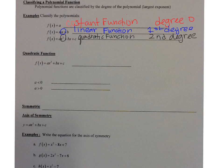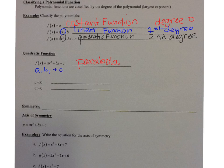Now let's talk about the quadratic function: f(x) = ax² + bx + c. When we graph this, we get a parabola. In a quadratic function, your a, b, and c values all have to be real numbers. And a cannot equal zero, because if a is equal to zero, then it's just linear.